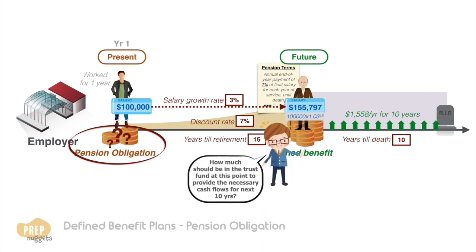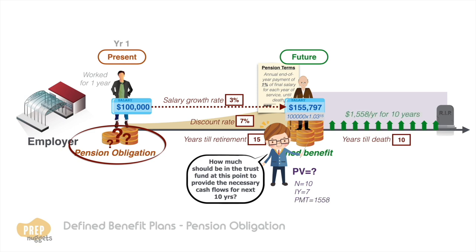What we're interested in is how much should be in the trust fund to be able to provide these cash flows for the next 10 years. We want to calculate the PV at this point. Number of periods is 10 and the interest per year we'll assume at the 7% discount rate. PMT is the annual payment of $1,558. Future value is zero as we expect no more payments at the end of 10 years. Punch all these into your TVM calculator and we get a present value of $10,943.